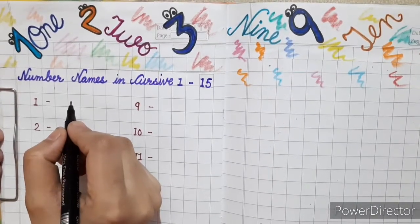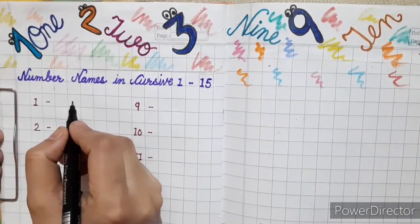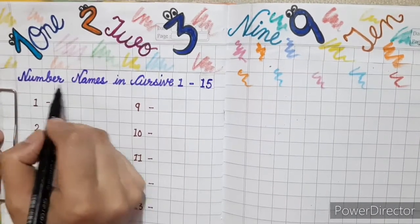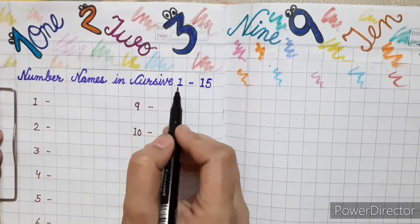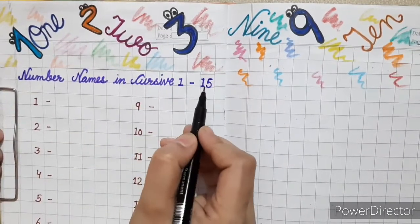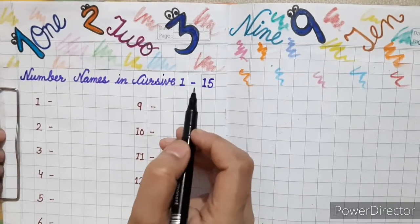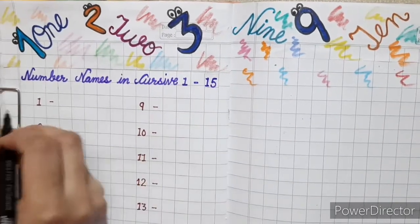Kids, today we will learn to write number names in cursive from 1 to 15. So, let's start.